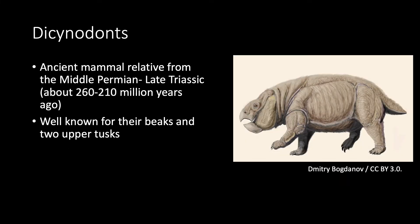Dicynodonts are ancient mammal relatives from the Middle Permian to the Late Triassic, which was about 260 to 210 million years ago. They're pretty funny looking animals, as you can see from the drawing on the right, and they're well known for their beaks and two upper tusks.